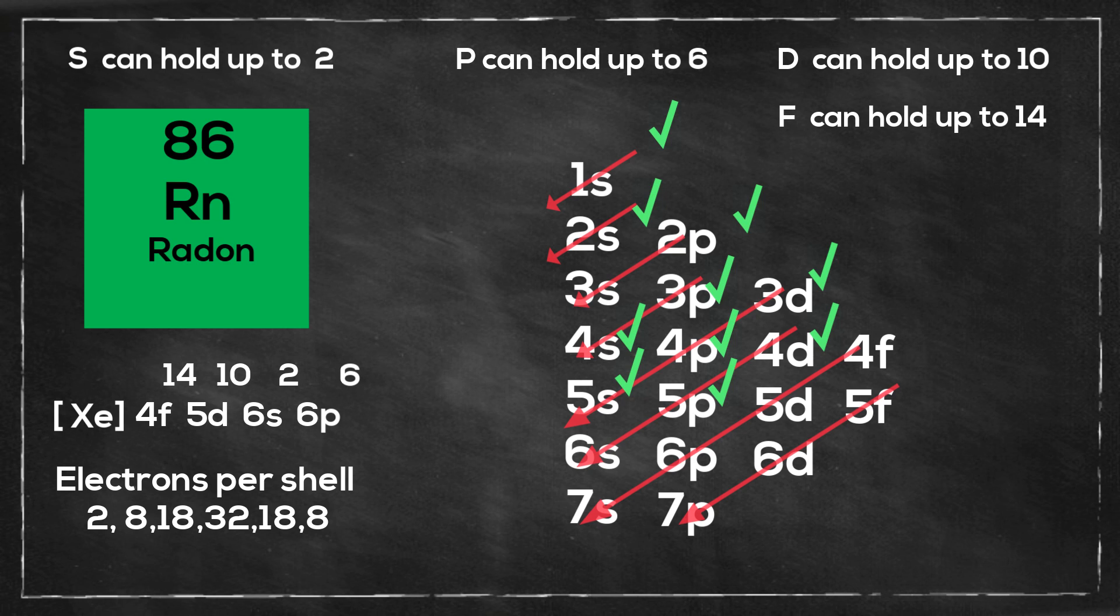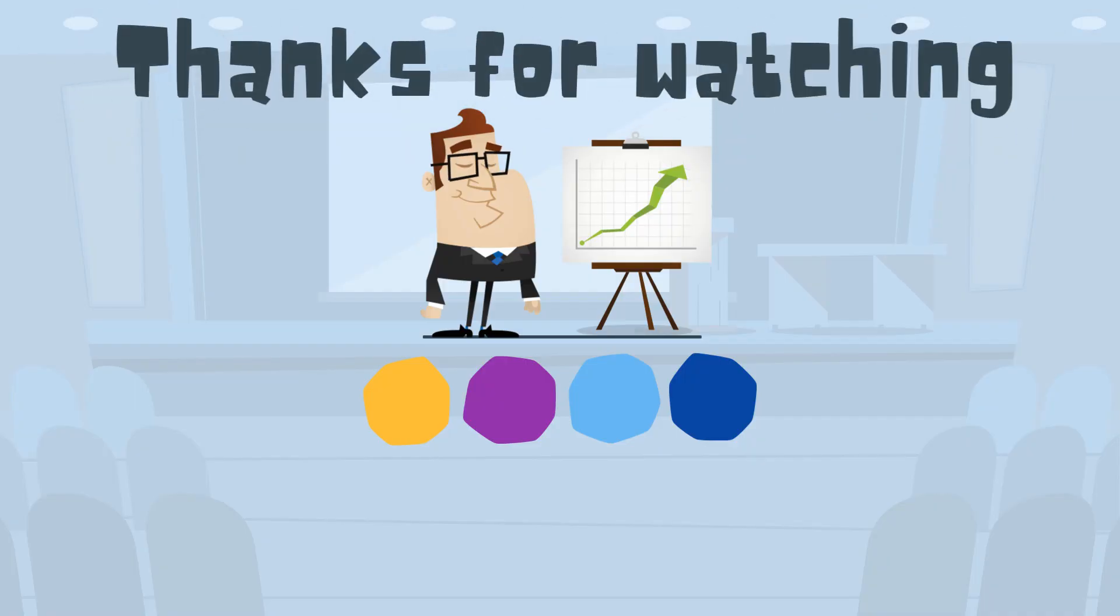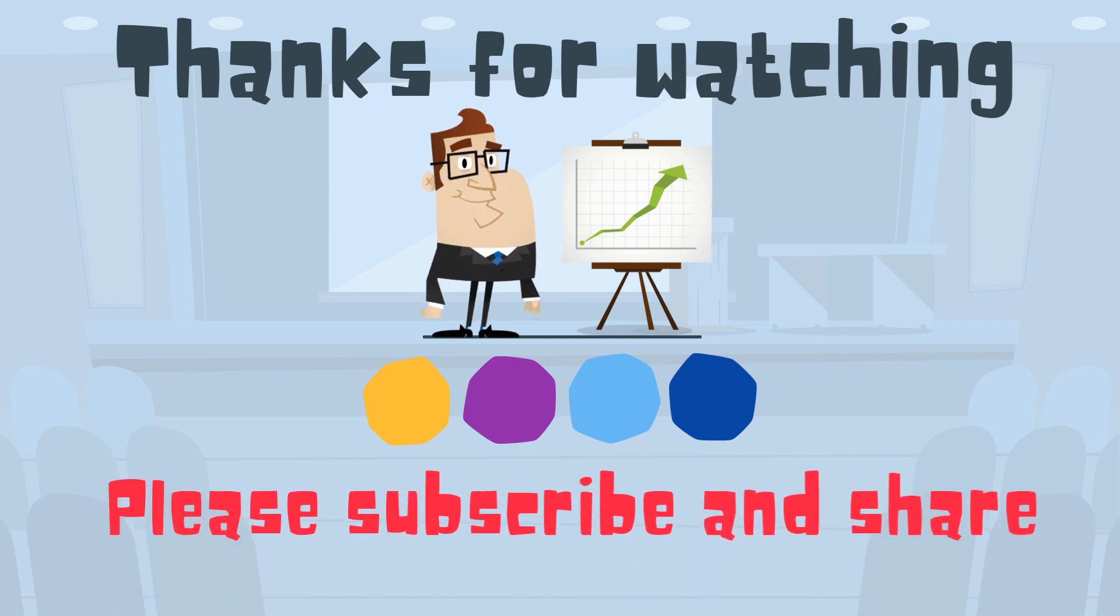So there we go, the electron configuration and the electrons per shell of each of the noble gases. Thanks for watching and MooMath uploads a new math and science video every day. Please subscribe and share.